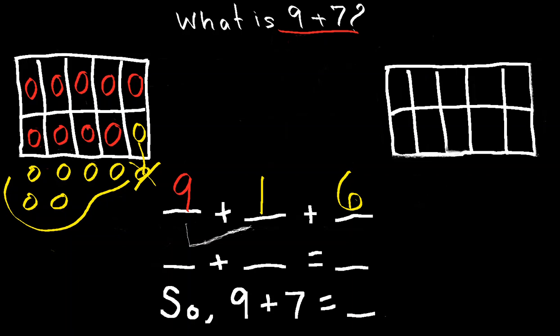So now that I've made a 10, I'm going to write this here. 9 plus 1 equals 10. You've added these two numbers together to create a 10.